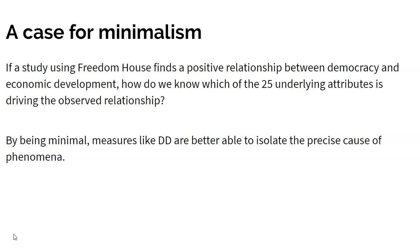The classic problem with Freedom House is that if you find a positive relationship between democracy and economic development using it, you have difficulty figuring out which of the 25 underlying attributes is actually driving the observed relationship. You're better off testing each of the 25 individually. By being minimal, measures like DD are better able to isolate the precise cause of phenomena — is it really about democratic procedure, or is it about something related but distinct?